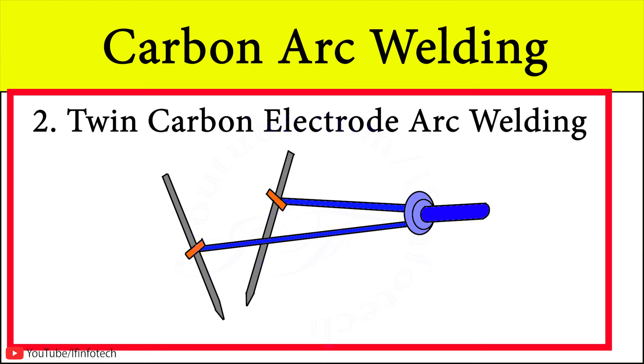In twin carbon arc welding process, the arc is struck between two carbon electrodes and the workpiece does not become part of the electric circuit. Here AC supply is preferred for twin carbon arc welding process.